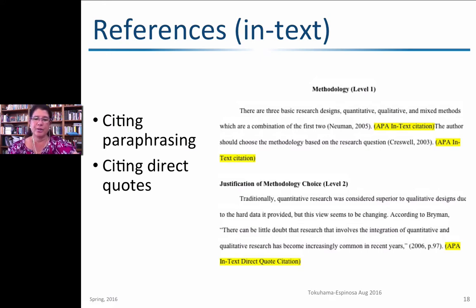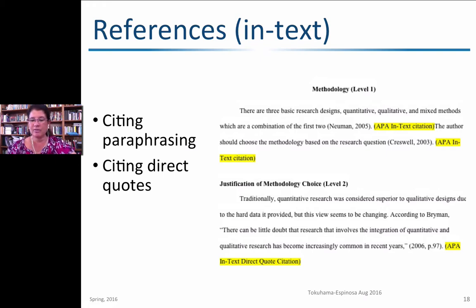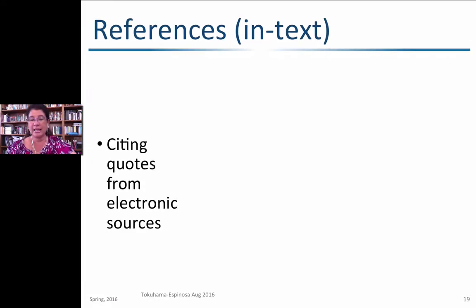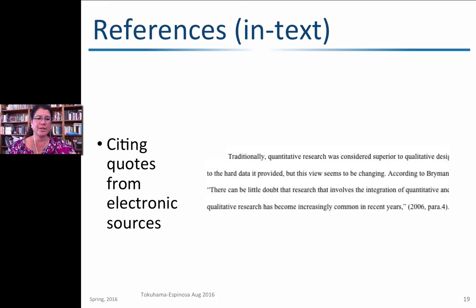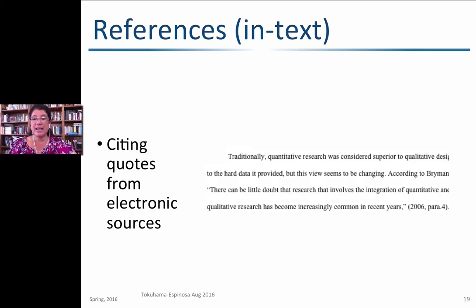The three elements of a direct quote citation don't have to be in a fixed order. You can say 'according to Breiman (2006)... (p. 97)' in any arrangement you like, as long as all three pieces are present. For electronic sources, you often won't have a page number, so you indicate the paragraph number instead.